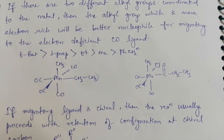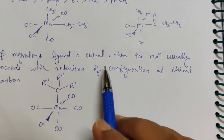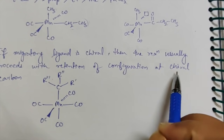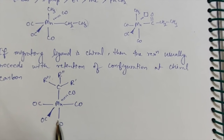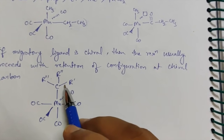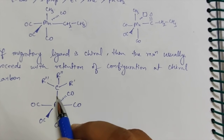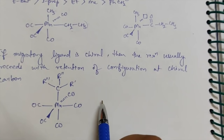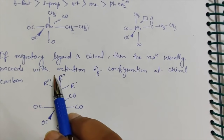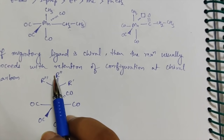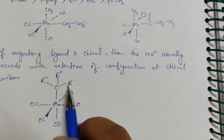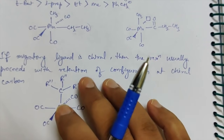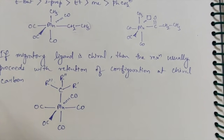If the migratory ligand is chiral, the reaction usually proceeds with retention of configuration at the chiral carbon. That means if this particular carbon is a chiral center and it migrates, in the product the chirality will be retained — if it is R configuration, in the product this carbon will also remain R in configuration. This is a very important point.